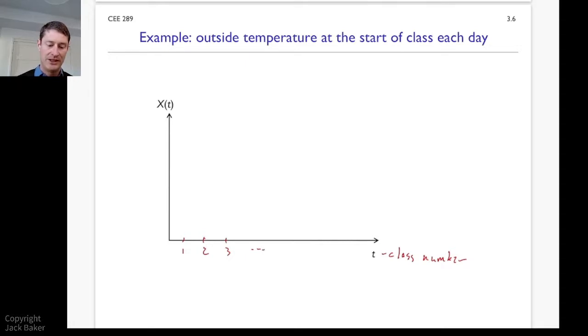And then the X of t would be the temperature. And so at the start of class one, temperature could be here, and here, and here, and so on. And so we've got a discrete parameter, class number, and we have a continuous temperature. So we've got a discrete parameter and a continuous X.